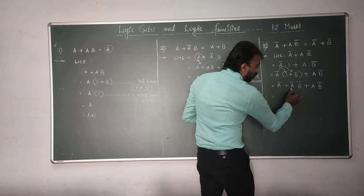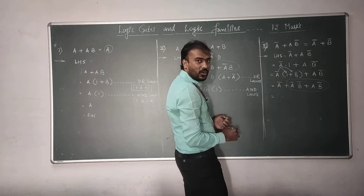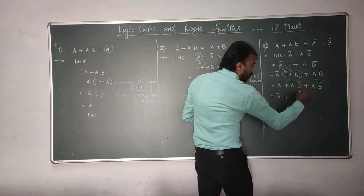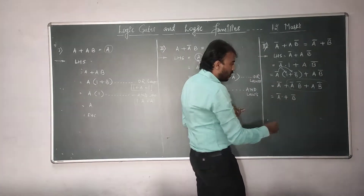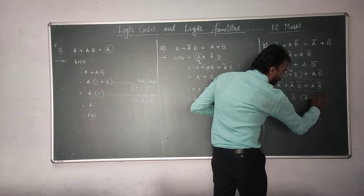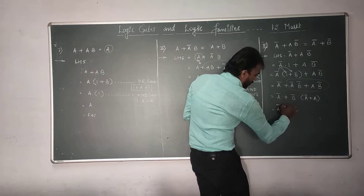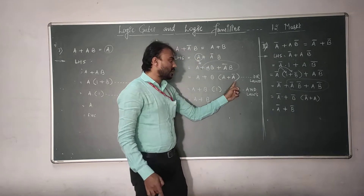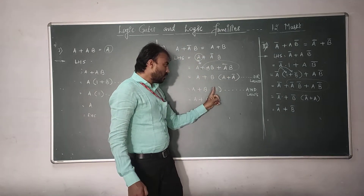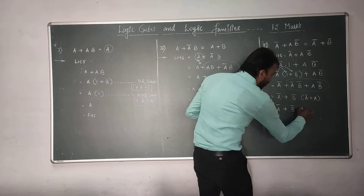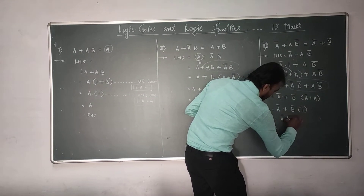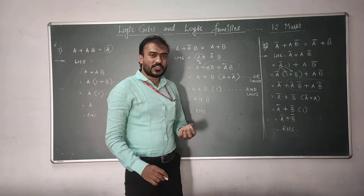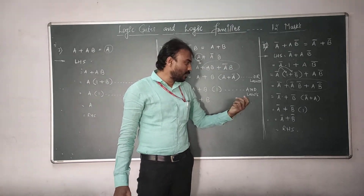What is common between these two terms? The common factor is B complement. I write B complement, and inside the bracket what remains is A complement plus A. A plus A complement is always 1, so this becomes B complement multiplied by 1, which is B complement. So the result is A complement plus B complement, and this is the third special law, which is hereby proved.